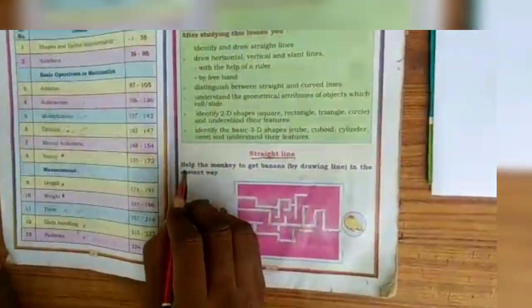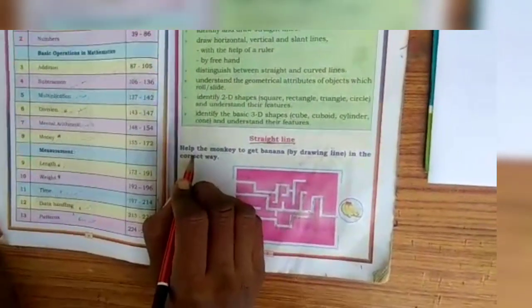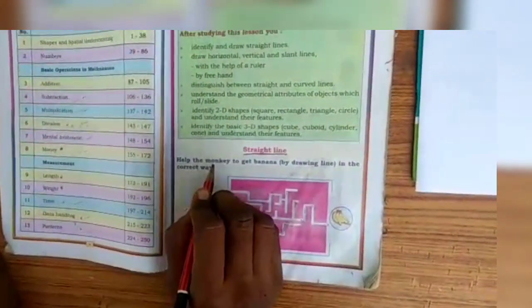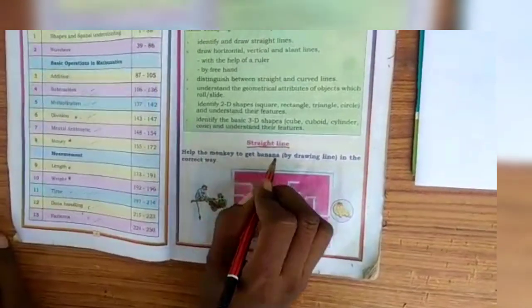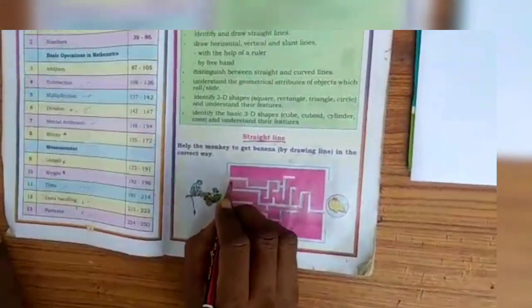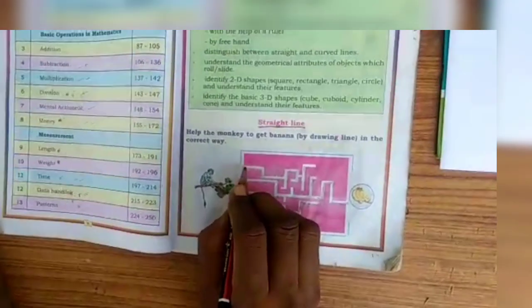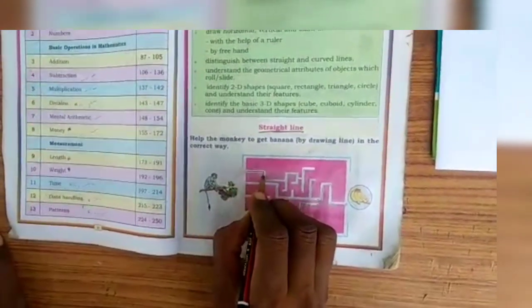Next, you have to do one small activity for straight line. You should show the way for the monkey to get the banana. First, you should try the first one. Take a pencil and draw a straight line.